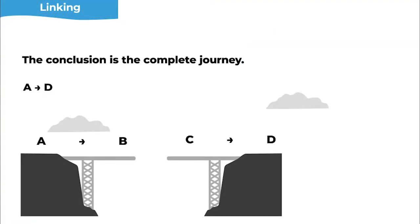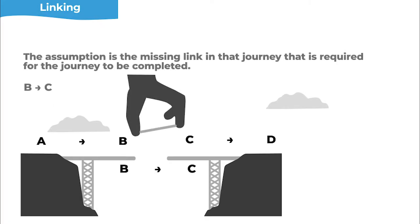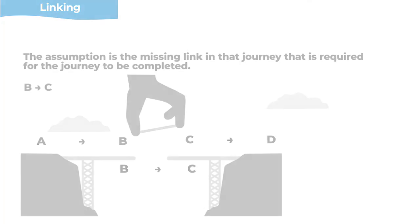Think of the conclusion as a journey from point A, your starting point, to point D, where you finish. The evidence given along the way are the segments of that journey already established, and the assumption is the link between them that allows the journey to be completed. What we're looking for is the gap in the journey, so we can anticipate how to connect those terms in the right answer.